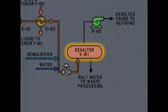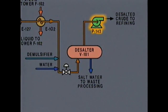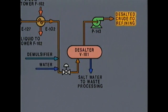In the desalter, water containing the salt and other impurities is drained from the bottom of the vessel and goes to a waste processing system. The oil is drawn off the top. Pump P-143 pumps the desalted crude from this system onto the next step in the process.